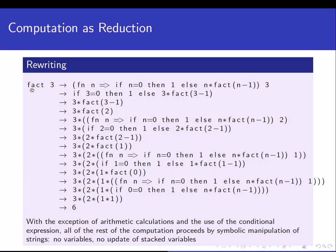When we try to reduce the expression `fact 3`, we rewrite it — we textually replace the body of the function `fact`, which is inside the parenthesis, and the argument 3 is written on the right-hand side. To reduce that expression, as we did in lambda calculus, we remove the lambda (fn here) and replace the formal parameter n with the argument 3. So we get: if 3 equals 0, then 1, else 3 times fact of 3 minus 1.